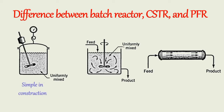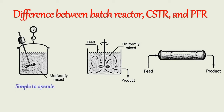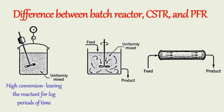A batch reactor is simple in construction, while CSTR and PFR are complex in construction. The batch reactor is simple to operate and has the flexibility of operation. CSTR offers greater constancy in operating conditions. PFRs are relatively easy to maintain as there are no moving parts. In a batch reactor, high conversion can be obtained by leaving the reactants in the reactor for long periods, but the disadvantage is it requires high labor cost per batch.